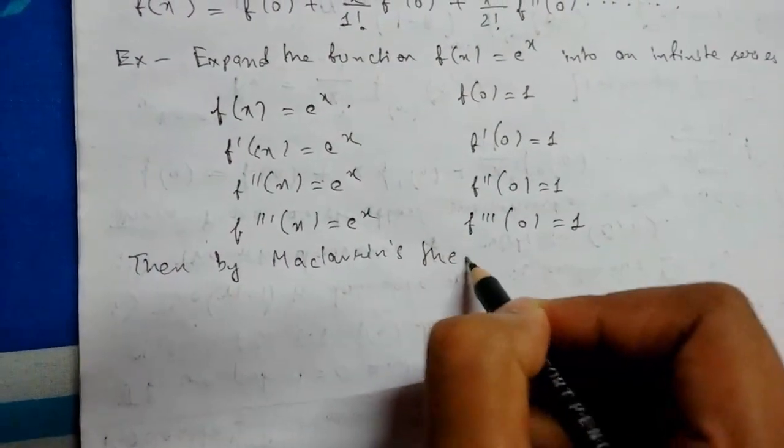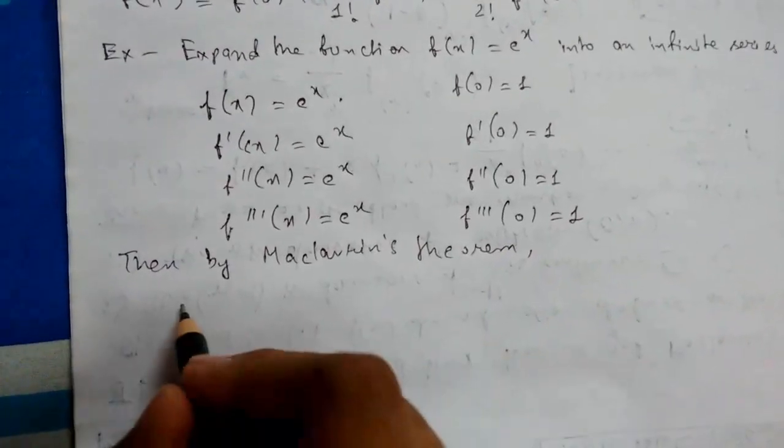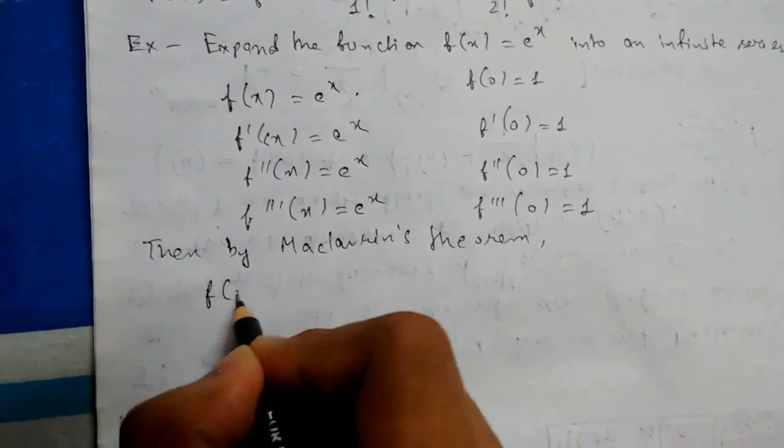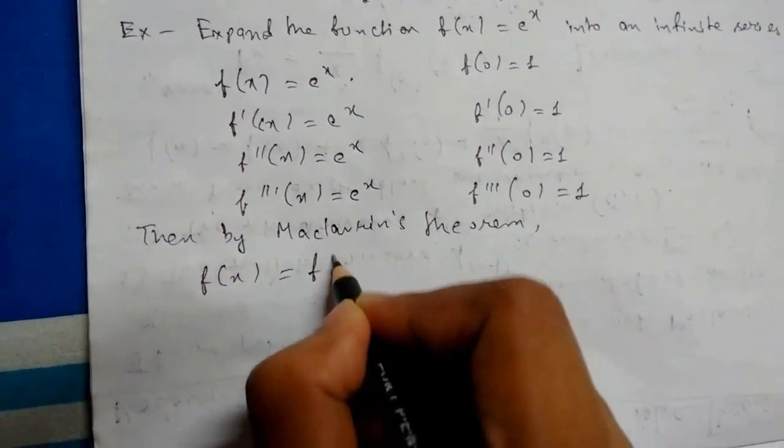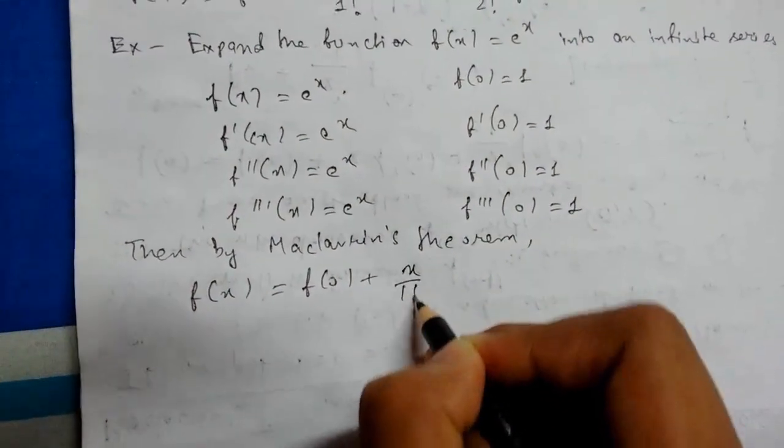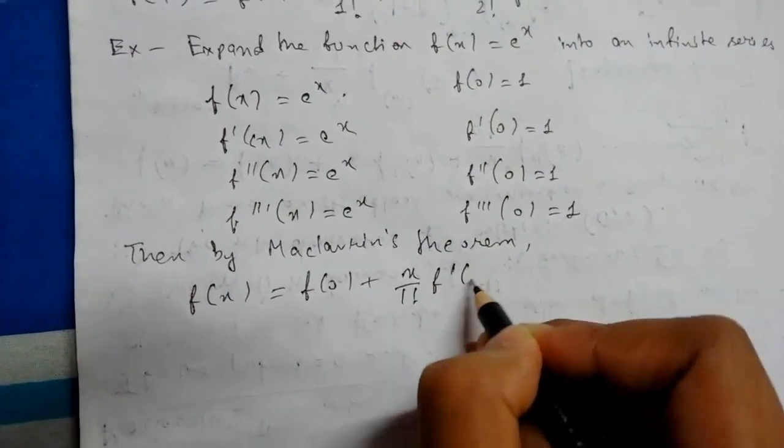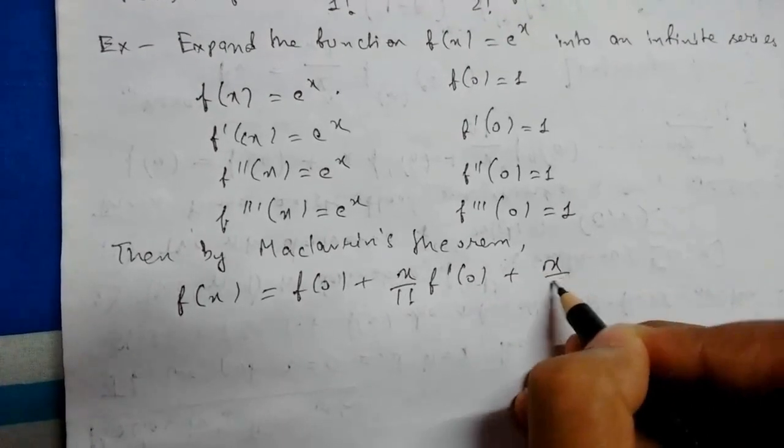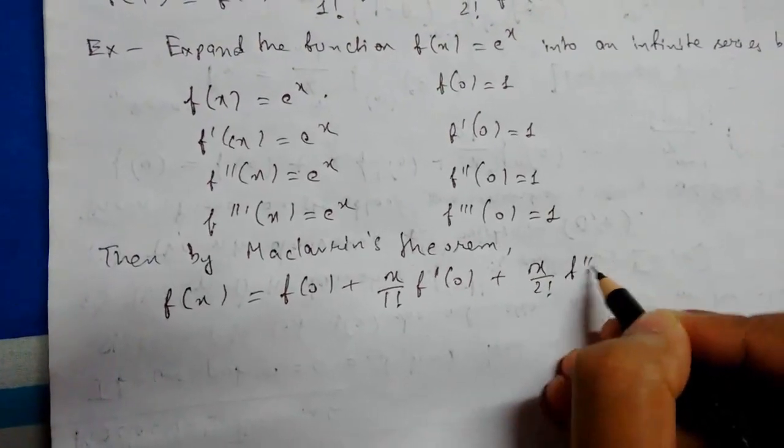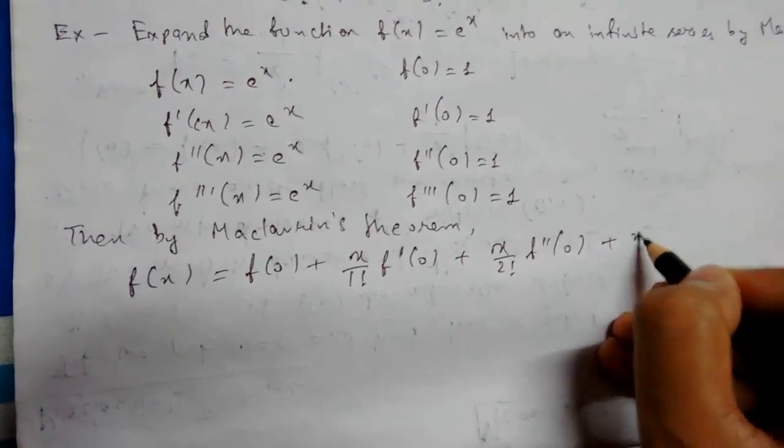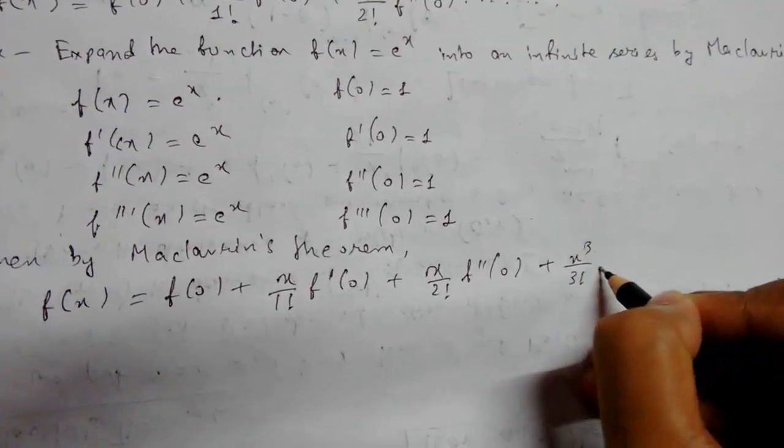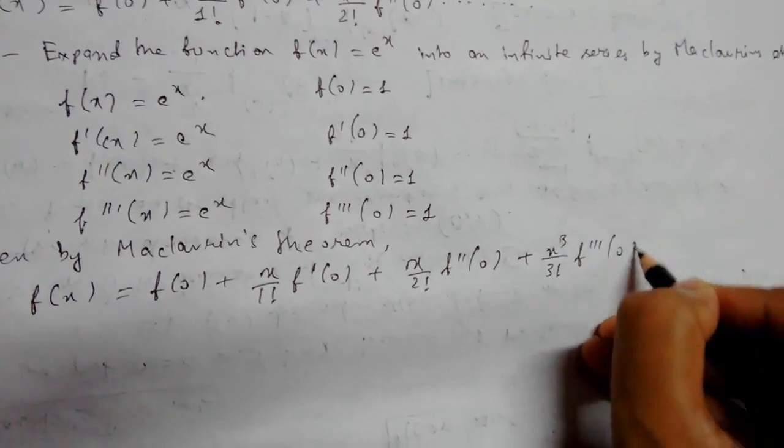we get f(x) = f(0) + (x/1!)f'(0) + (x²/2!)f''(0) + (x³/3!)f'''(0) + ... and so